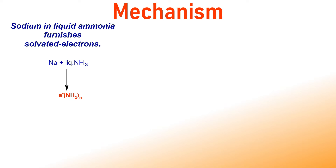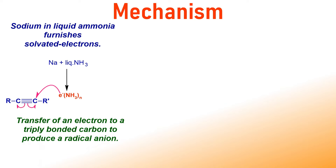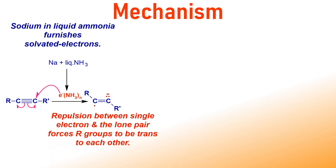As already mentioned, the solvated electrons are formed when metals are dissolved in ammonia. There is the transfer of electrons onto one of the triply bonded carbons to produce a radical anion. The repulsion between the odd electron and the lone pair forces the R-groups to orient trans to each other about the double bond.